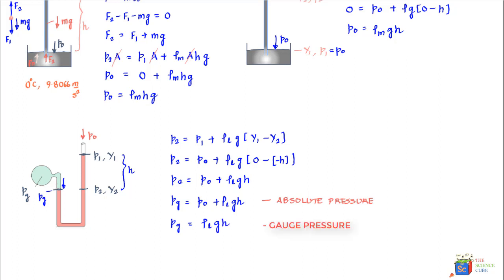In conclusion, the approach to these problems is to identify two points in the liquid where pressure is equal, find the pressure expression on each side — accounting for atmospheric pressure and the liquid or gas column — equate them, and solve for the unknown variable. If you liked this video, please give a thumbs up and subscribe to the Science Cube.